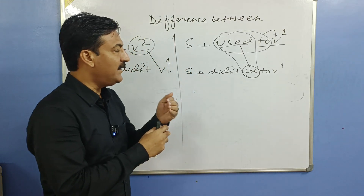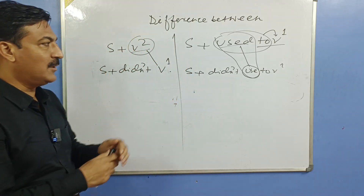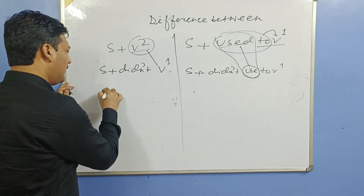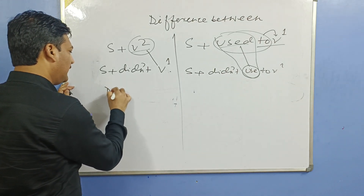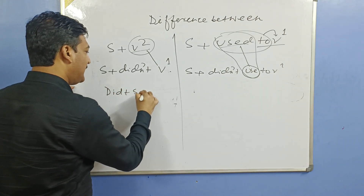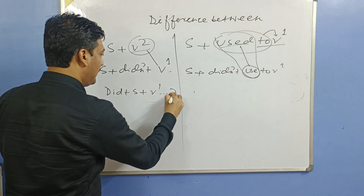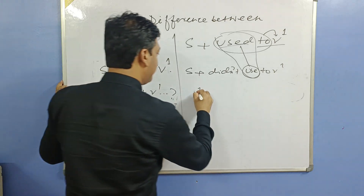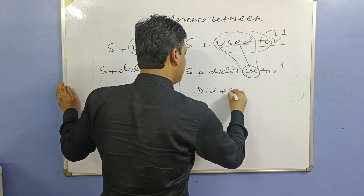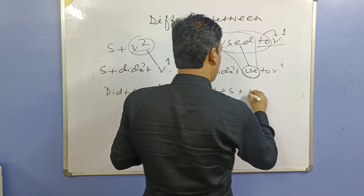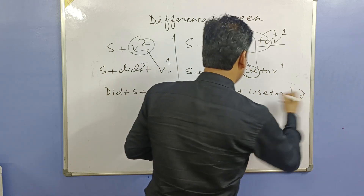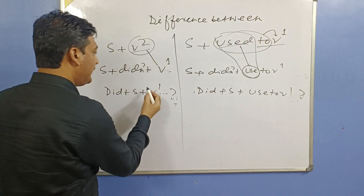Toh jab kabhi bhi past mein negative ho, toh 'did not'. Ab teesra hai: question. Jab kabhi bhi hum sawaal karte hain toh helping verb subject se pehle aa jaata hai, aur yeh ho gaya sawaal: did + subject + V1 (for simple past), or did + subject + used to + V1 (for used to). Antar sirf itna hai — 'used to' add hota hai.